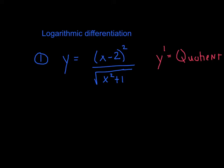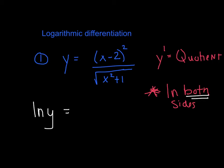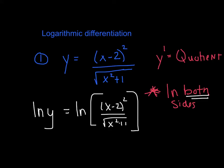Here's a little trick we can do. Remember that math is all about balancing. Off to the side, let's make a little note: we are simply going to take the natural log of both sides. This is legal because we are doing it to both sides. So we're going to slap an ln in front of both sides: ln of y equals the ln of this whole quantity - x minus 2 squared over the square root of x squared plus 1. That's legal because I'm doing it to both sides.